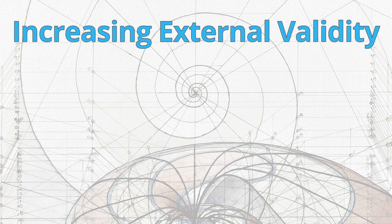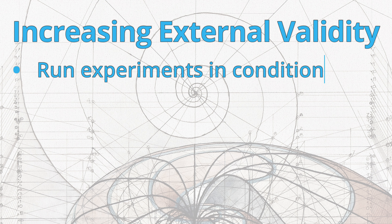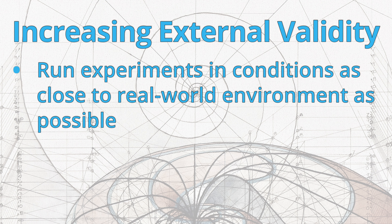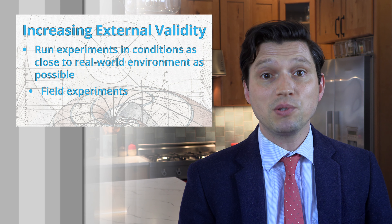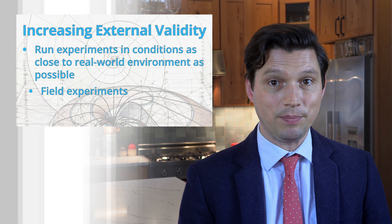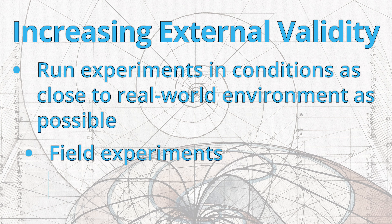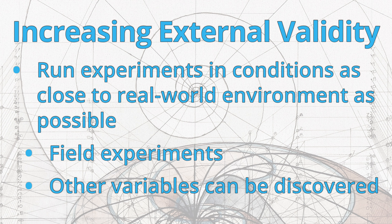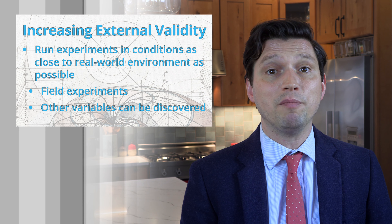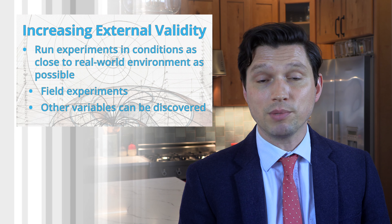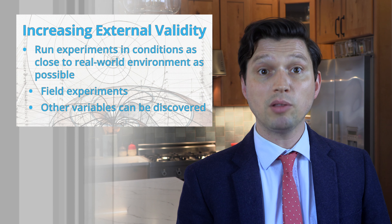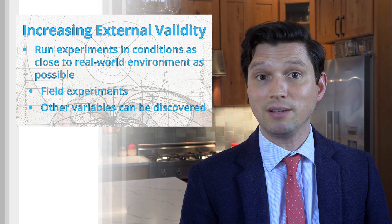Another way to ensure external validity is to test the product in an environment as close to the real-world situation as possible. This can even go so far as conducting field experiments, which take place in the real environment in which the product will be used. In many cases, this is the most effective way to increase external validity, since factors the experimenter hadn't even considered could be discovered. Paradoxically, controlling for fewer variables — at least directly controlling fewer variables — can lead to a better experiment. This is a little like beta testing software: give the product to real users who will run it on their computers at home or work to see how the software actually performs in real-world use cases. In that way, developers can learn a lot about how the software will perform and what improvements still need to be made.